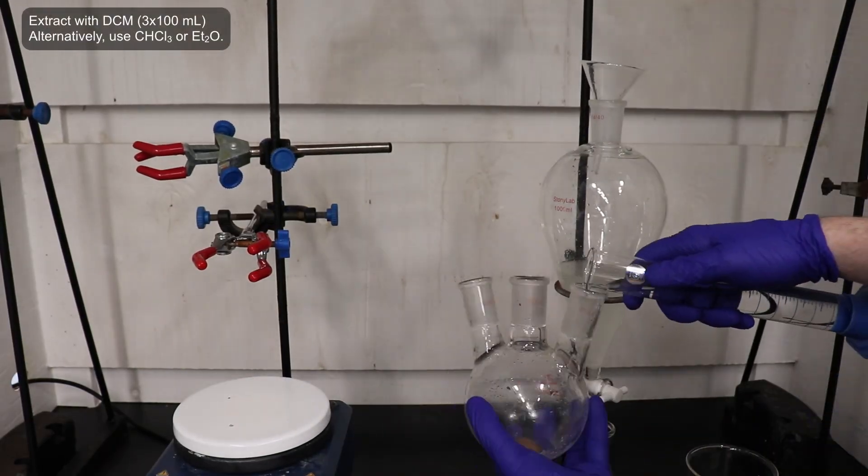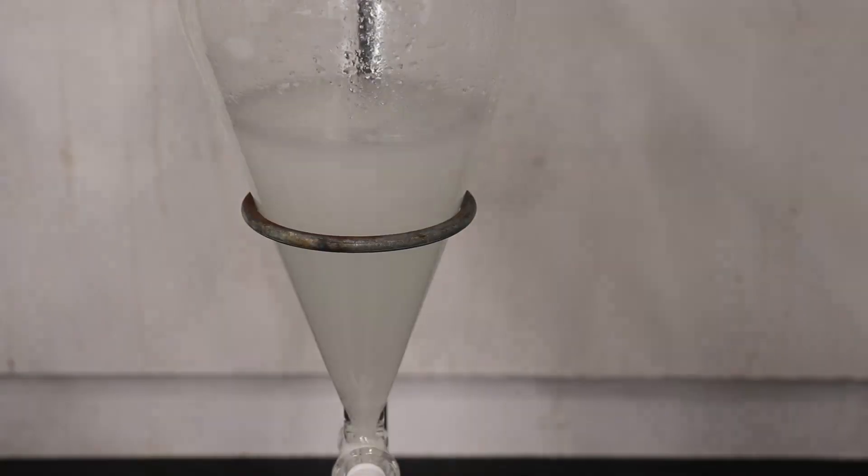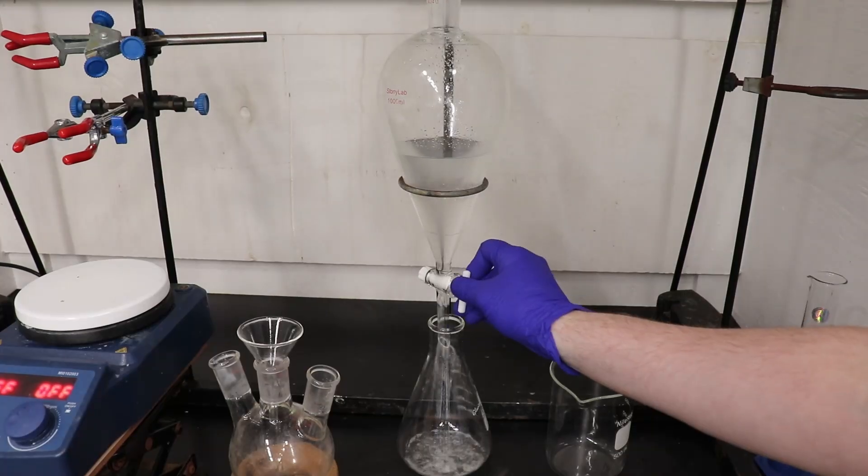To isolate the 2-bromopropanoic acid, I extracted the aqueous phase with 3 100 mL portions of dichloromethane, and alternatively, the DCM could be substituted for diethyl ether or even chloroform.